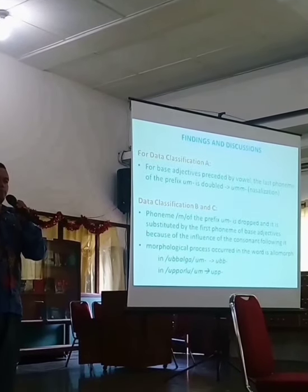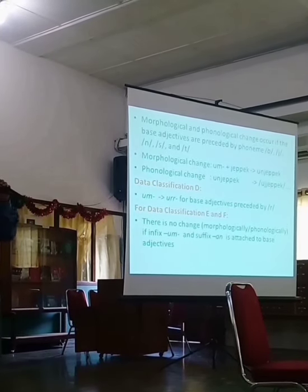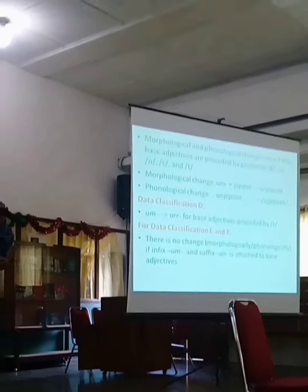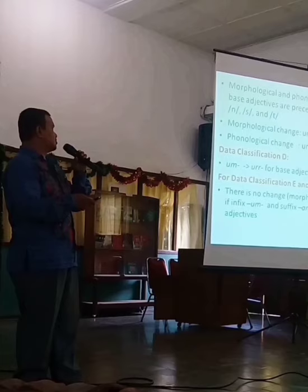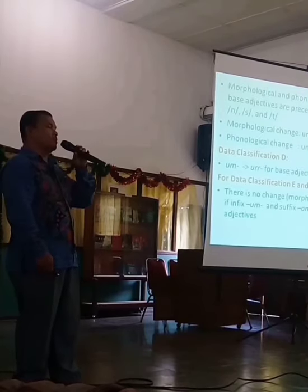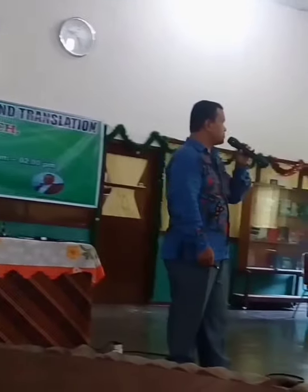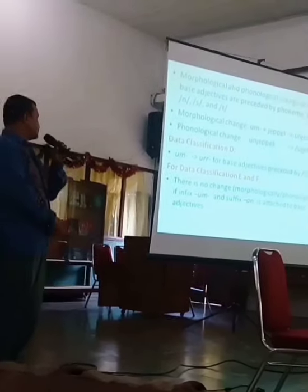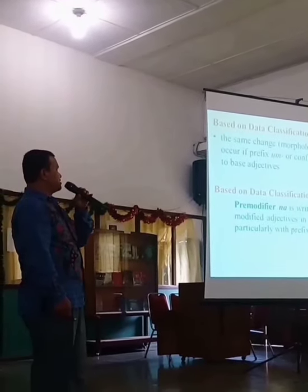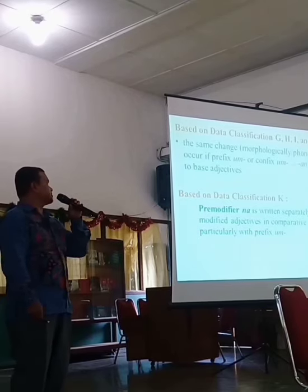'Um' plus 'b': 'um' plus 'porlu' does not become 'umporlu' but 'uporlu.' Morphological and phonological changes also occur when the base adjective begins with consonant B — like 'bulga,' 'ucepek,' 'ununut,' 'usanga,' 'utipu.' Based on classification D, 'um' becomes 'ur' with double R. Classifications E and F show no change either morphologically or phonologically. Classifications G, H, I, and J show the same morphological or phonological changes when prefix 'um' or confix 'um-an' is attached to various adjectives.